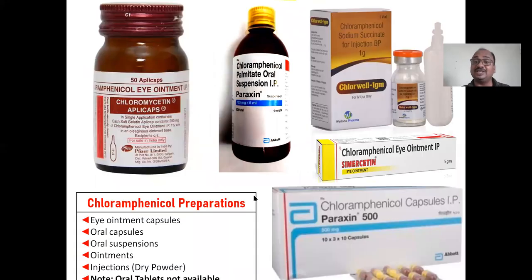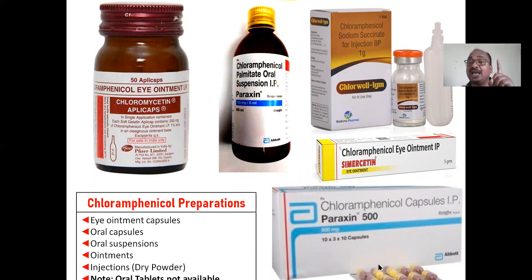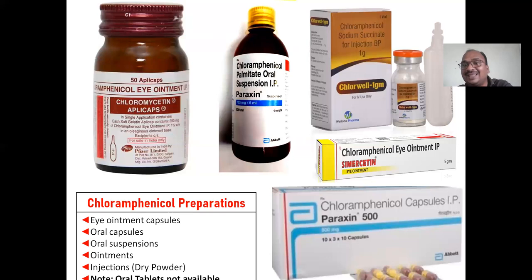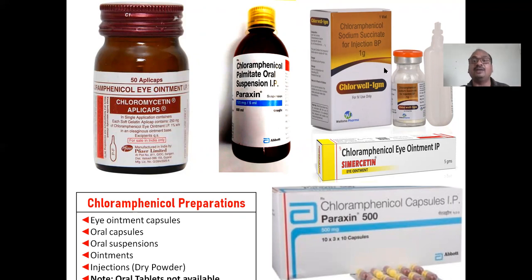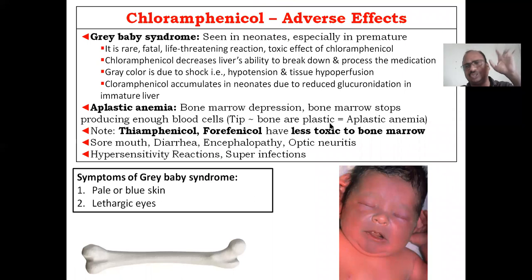Chloramphenicol is used for intraocular infections, external ear infections, urinary tract infections, and typhoid fever. Regarding formulations: oral tablets are not available — only capsules. The soft gelatin capsules are eye caps called 'apply caps' — you apply them, not swallow them. The hard gelatin capsules are for oral swallowing. Chloramphenicol eye ointment bulk packages contain 50 apply caps. Chloramphenicol palmitate oral suspension and eye ointments are also available, along with chloramphenicol sodium succinate dry powder injection.